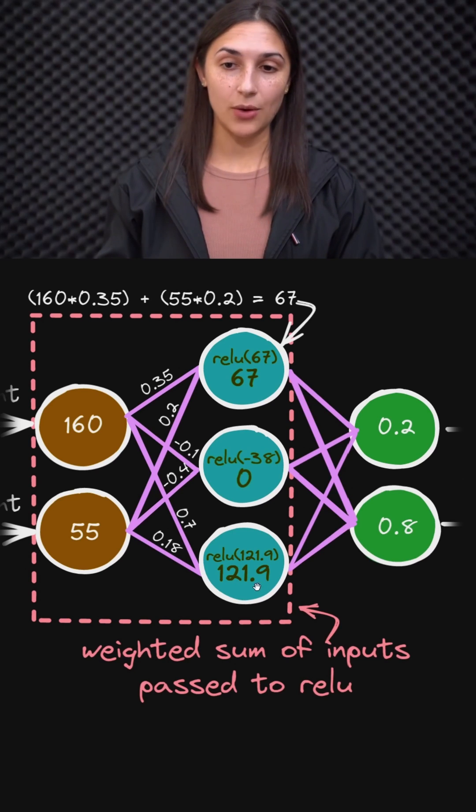We covered in a previous lesson how the values for the nodes here in blue in this hidden layer were computed.